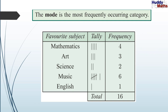The mode: this is trying to describe something about the data set in simple terms. The mode is the one that occurs most frequently. What's the mode in this one? The one that occurs most frequently is music — very popular subject. There were six people who favoured music, so that was the mode.